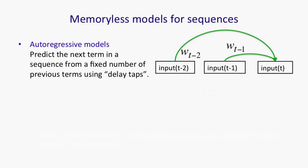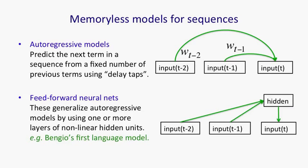I'm now going to give a quick review of some of the other models of sequences before we get on to using recurrent neural nets to model sequences. A nice simple model for sequences that doesn't have any memory is an autoregressive model. What that does is take some previous terms in the sequence and try and predict the next term basically as a weighted average of previous terms. The previous terms might be individual values or they might be whole vectors, and a linear autoregressive model would just take a weighted average of those to predict the next term. We can make that considerably more complicated by adding hidden units, so in a feedforward neural net, we might take some previous input terms, put them through some hidden units, and predict the next term.